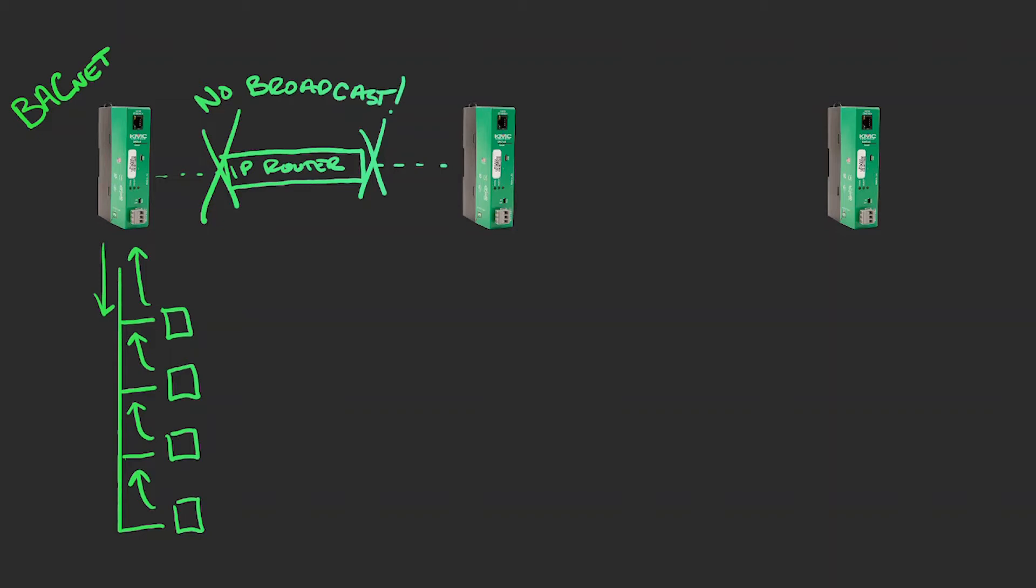Though BACnet routers can forward broadcast messages, the IP routers do not. This lack of broadcast forwarding by IP routers prevents the BACnet routers and devices from discovering routers and devices on other BACnet networks.